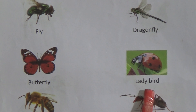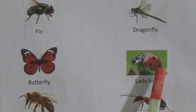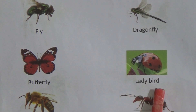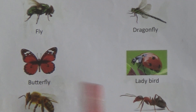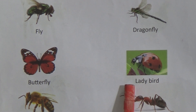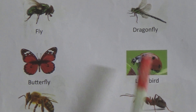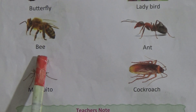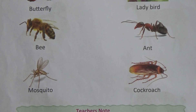Next one, this insect name is ladybird. Sometimes we call it ladybug, but in your book it is written ladybird. Let's practice its name. The spelling of ladybird is L-A-D-Y-B-I-R-D, ladybird.